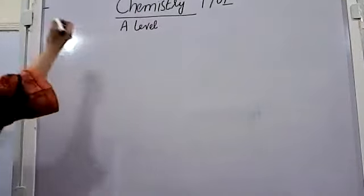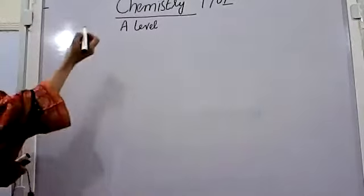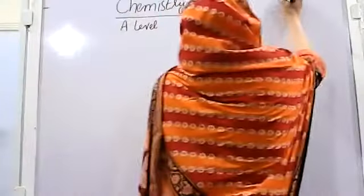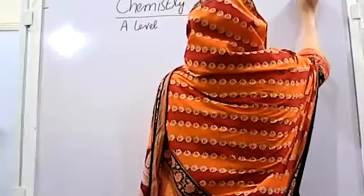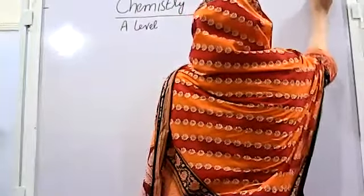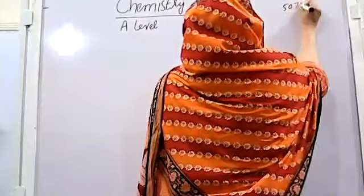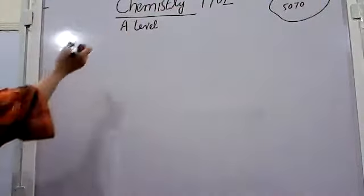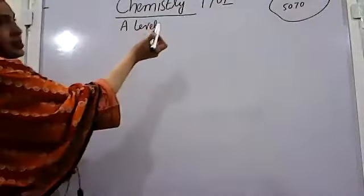First of all, regarding Chemistry 9701: if you're taking AS Level this year, the code is 5701. For A Level, the code is 9701.